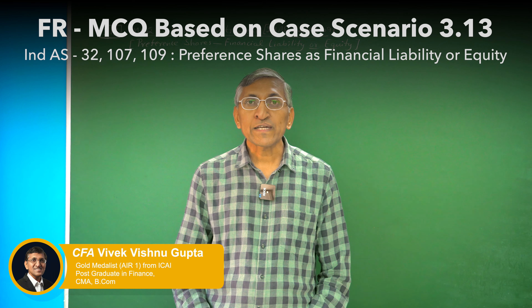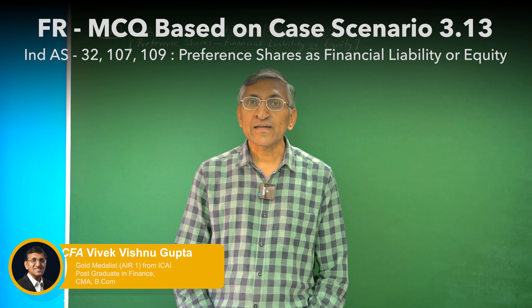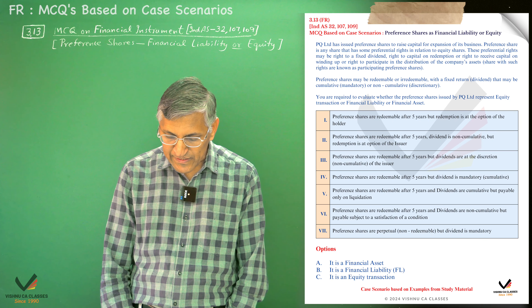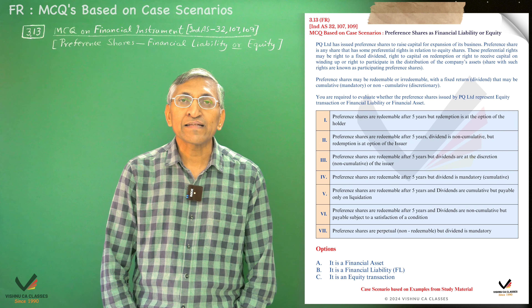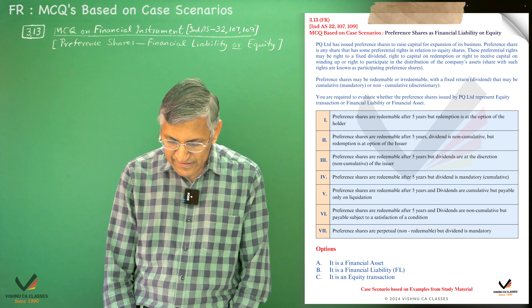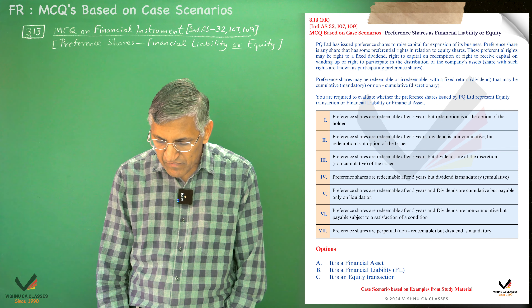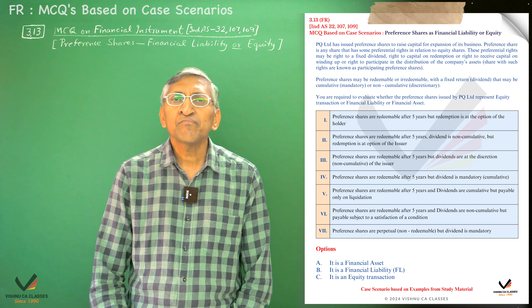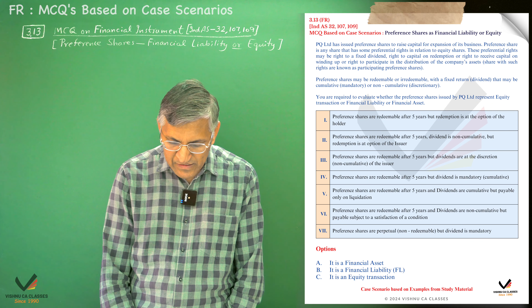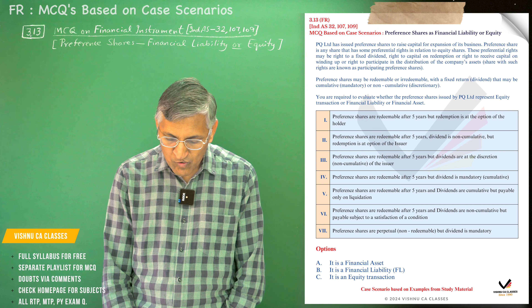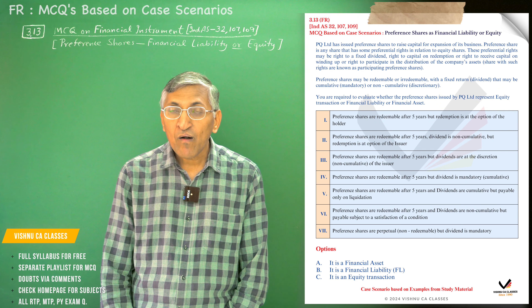The major topic is preference shares — whether a preference share is a financial liability or equity. EQ Limited has issued preference shares to raise capital for expansion. A preference share gives holders certain preference rights over equity shares, such as rights to a fixed dividend, rights to capital on winding up, or rights to participate in distribution of company assets, known as participating preference shares.